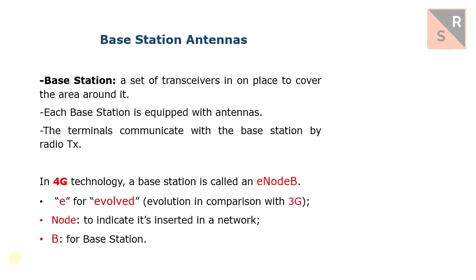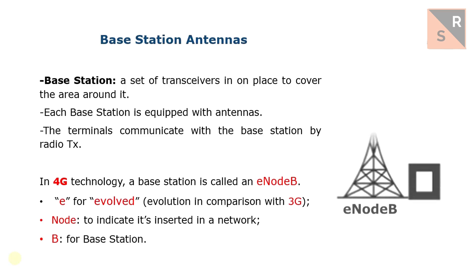So now we have two things that are very different: a base station — that is to say, a set of transceivers located in a place to cover the area around it — and the antennas. The terminal around the base station can communicate with it by radio transmission. In 4G technology, a base station is called E-Node B. The E stands for Evolved, indicating an evolution in relation to the previous generation; Node indicates it is inserted in a network; and B stands for base station.